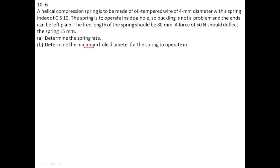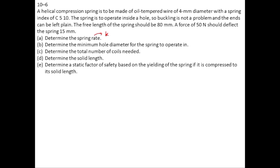Since the minimum hole diameter is required, it should equal the outside spring diameter. We also need total number of coils, solid length, and the factor of safety when the spring is compressed to solid length. The outside diameter of the spring equals mean diameter plus wire diameter: 40 mm plus 4 mm equals 44 mm. So the minimum hole diameter should be 44 mm.